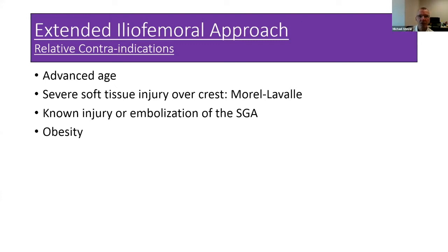In the circumstance of a soft tissue degloving injury, you could lose the joint quite quickly and not have very good reconstructive options. There are also controversies regarding its use with a known injury or previous embolization of the superior gluteal artery, depending on how it was embolized or injured and how you assess it.